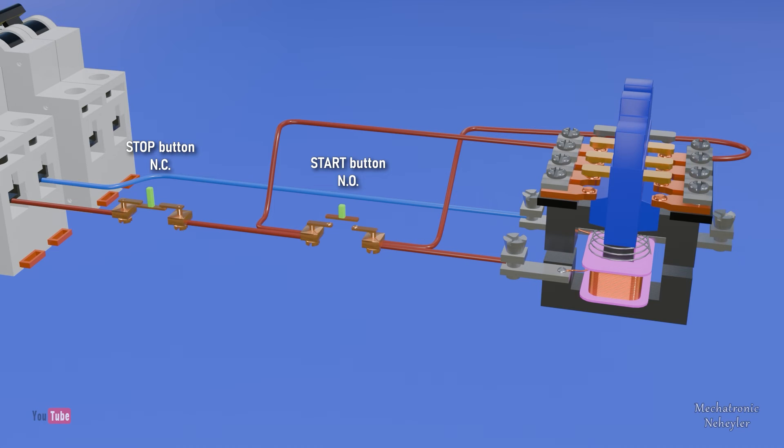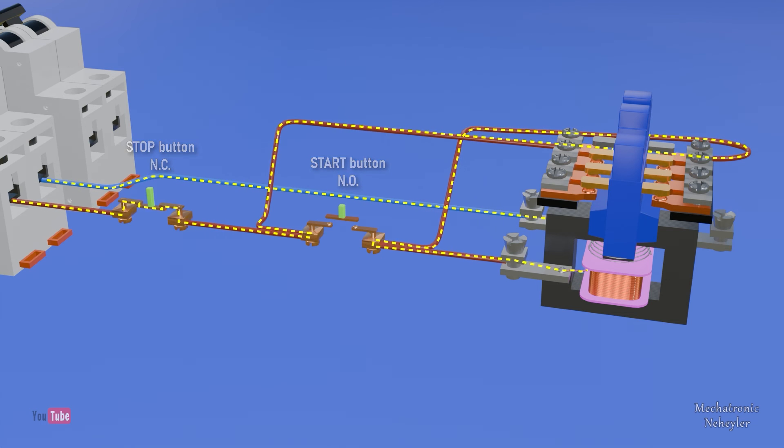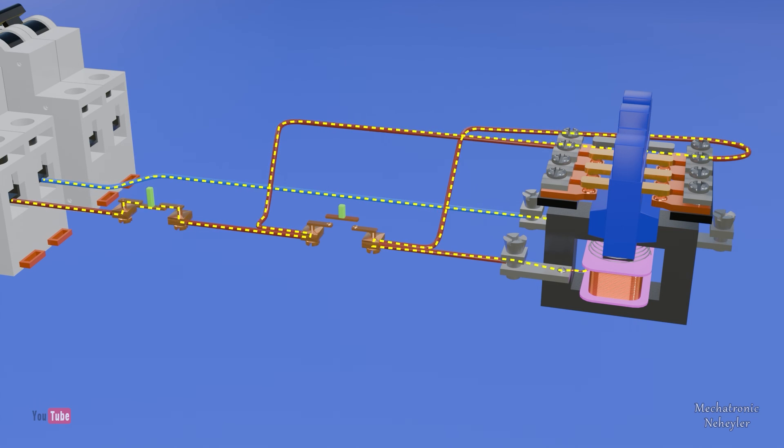In this way, when pressed, it allows the current to circulate, energizes the coil and closes the contacts, but since a cable is also connected through the auxiliary contact, then the current also circulates there to the coil. Even if the start button is opened, the current will continue to flow as shown. And then there we have the self-retention of the contactor.